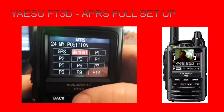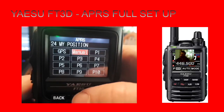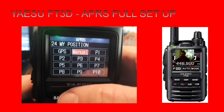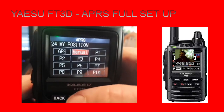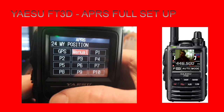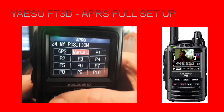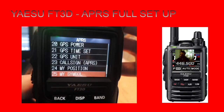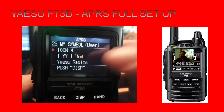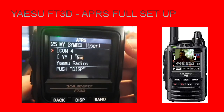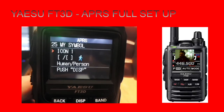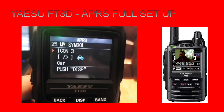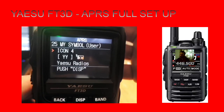Your position - mine's on manual, but if you've got a GPS lock then GPS is fine. Manual always works; GPS is hit and miss depending on your location. The symbol - I've got a radio icon on there, but you can choose all sorts of symbols: walking, bike, car - it's quite fun.